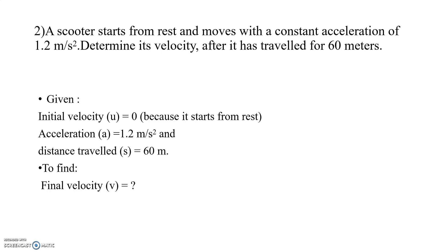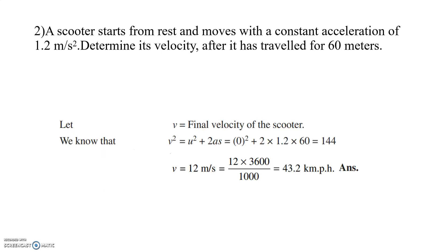Second problem: a scooter starts from rest and moves with a constant acceleration of 1.2 m/s². Determine its velocity after it has traveled 60 meters. Given: initial velocity u = 0 (starts from rest), acceleration a = 1.2 m/s², distance s = 60 m. Using the equation v² = u² + 2as and substituting values, we get v = 12 m/s, which is 43.2 km/h.